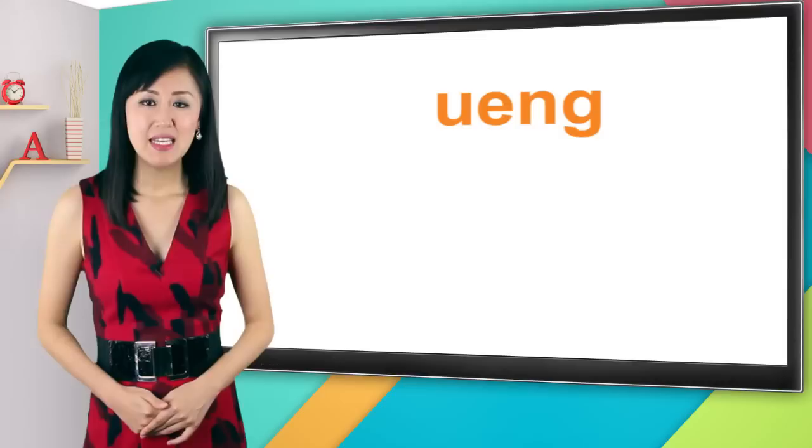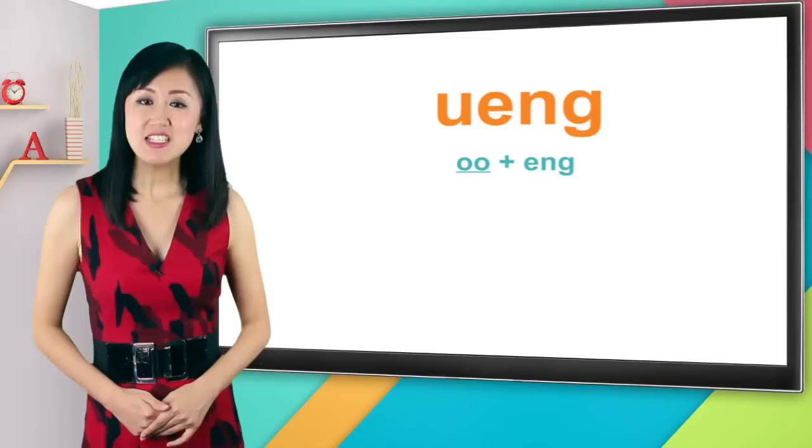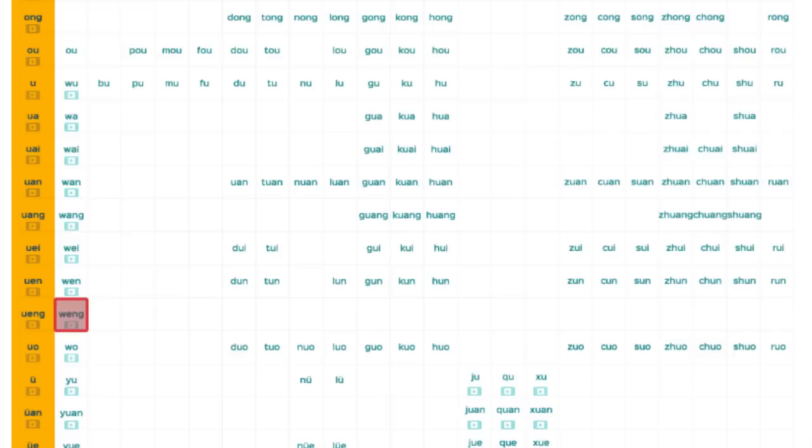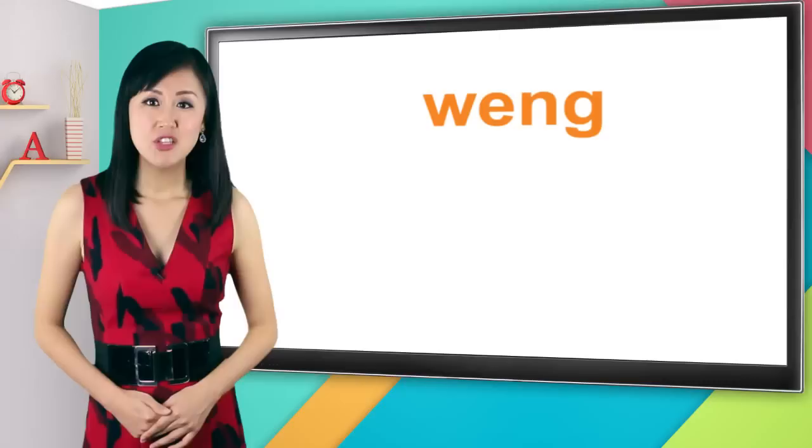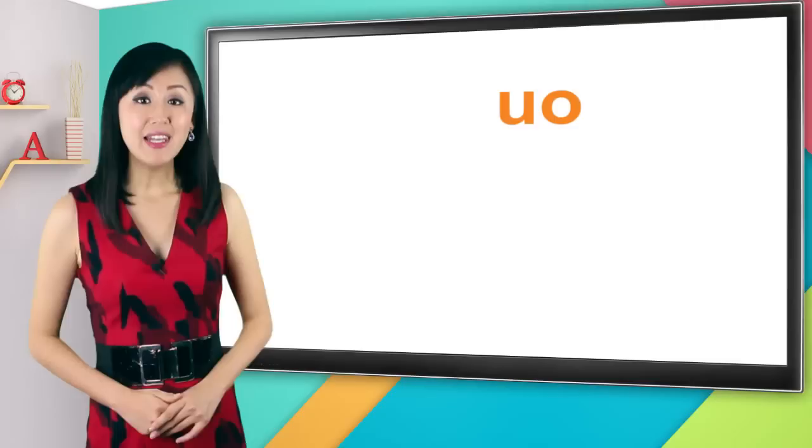Okay, the next one is u-e-n-g, pronounced weng, weng. It's wu plus un, weng. This is a unique one. Let me show you on the pinyin chart. Look at this, w-e-n-g weng on the first column is the only syllable that exists on the entire u-e-n-g row, so you only need to master this one and you're set.